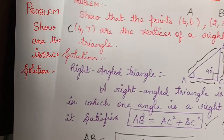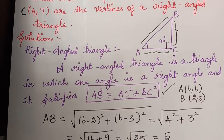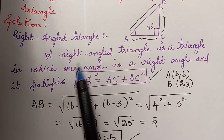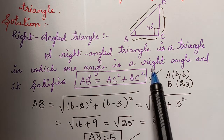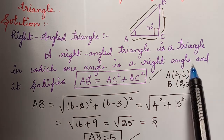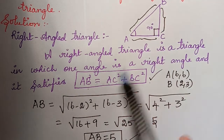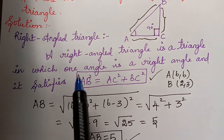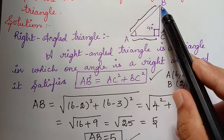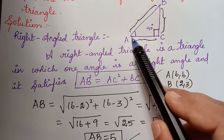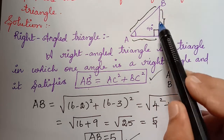And in the next video, we learnt about the right angle triangle. So what is a right angle triangle? It is a triangle in which 1 angle is a right angle — that is, 1 of the angles will be 90 degrees — and it has to satisfy the Pythagoras theorem given by AB squared equals AC squared plus BC squared.